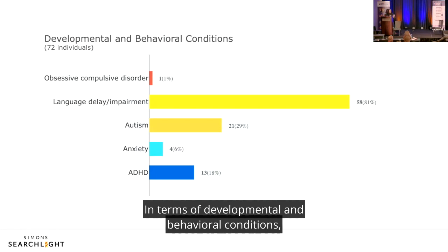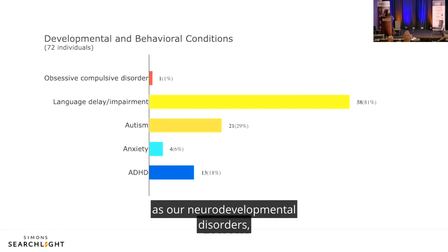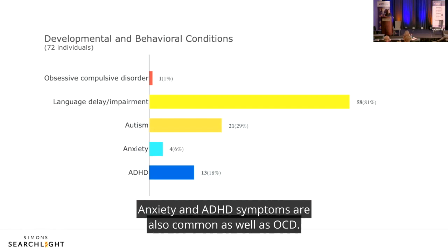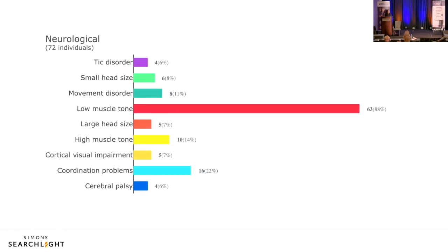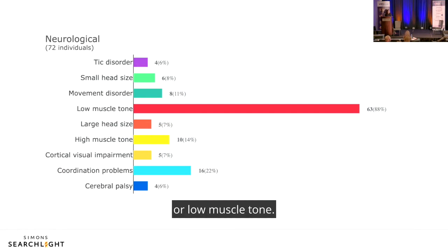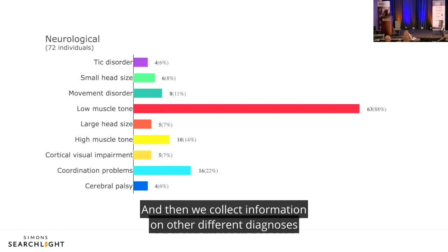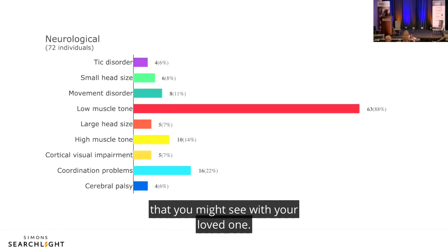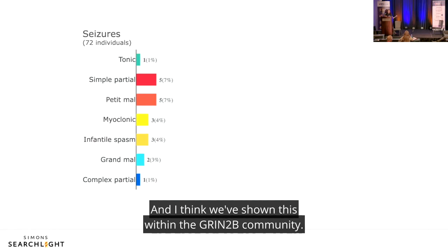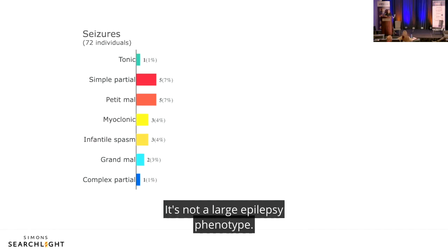In terms of developmental and behavioral conditions, the majority of GRIN2B individuals have language delays and language impairment. About 30% present with an autism diagnosis. Anxiety, ADHD symptoms, and OCD are also common. Neurologically, many children get diagnosed with hypotonia or low muscle tone. Coordination problems and cortical visual impairment are also seen. Seizures are not a prominent feature in GRIN2B — it's not a large epilepsy phenotype, though different types of seizures are seen across the group.